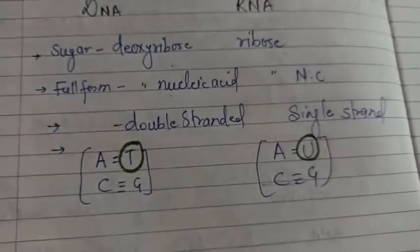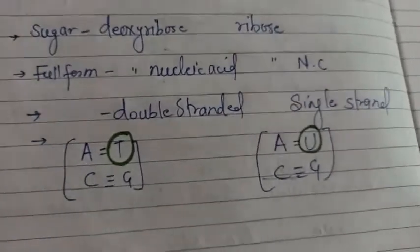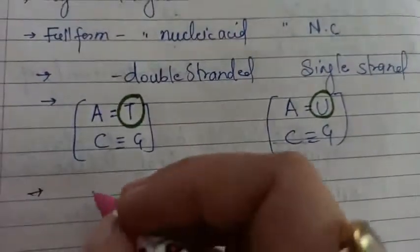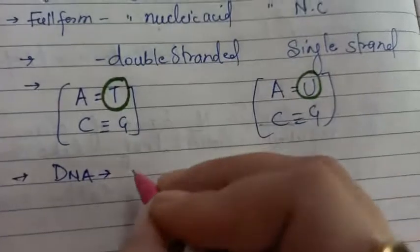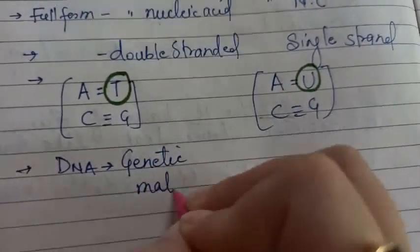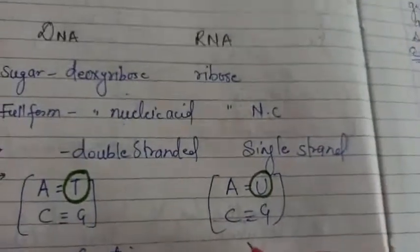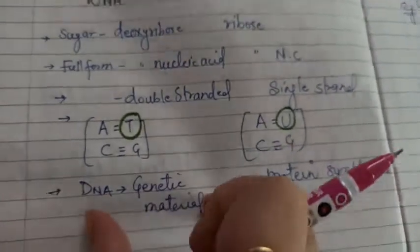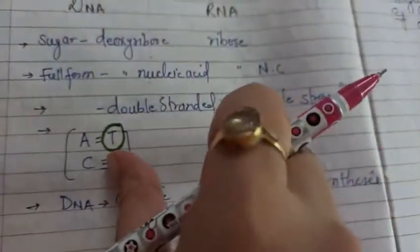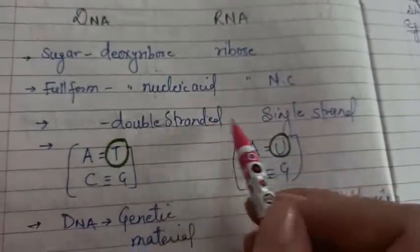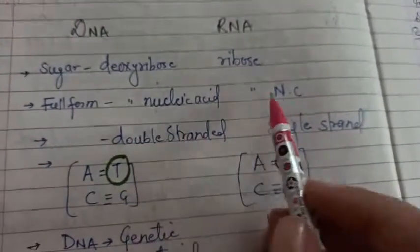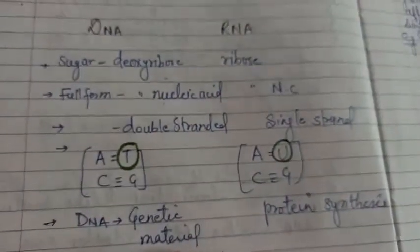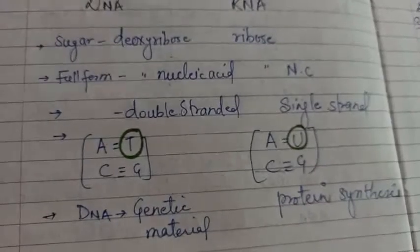So this is the fourth and last important difference. On the basis of function also you can tell a fifth difference. The last and fifth difference is DNA is the carrier of genetic material. It carries genetic material from one generation to other, whereas the function of RNA is to do the protein synthesis. Depending on function, structure, number of strands, full form, and presence of sugar, these were the easiest five differences between DNA and RNA. I hope you have understood properly. Thank you for watching.